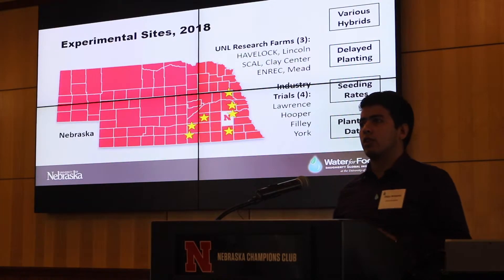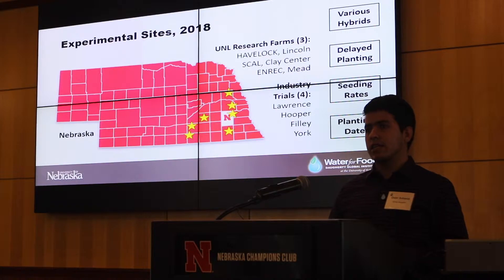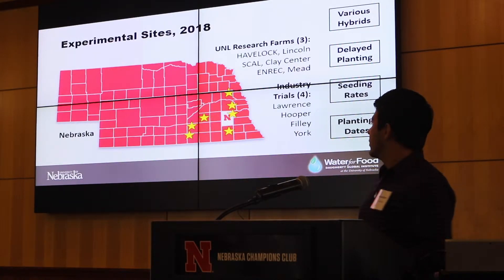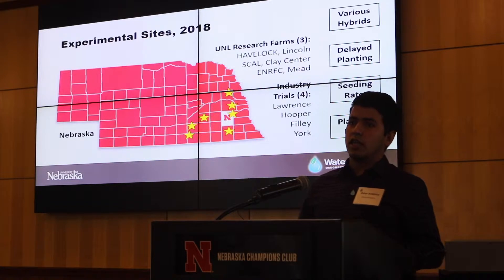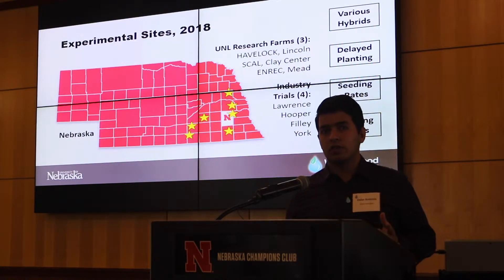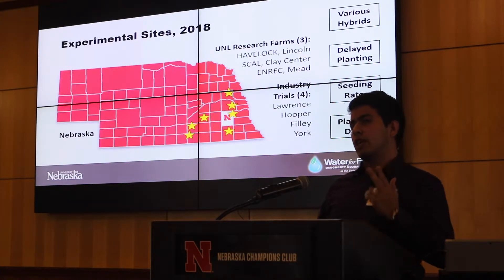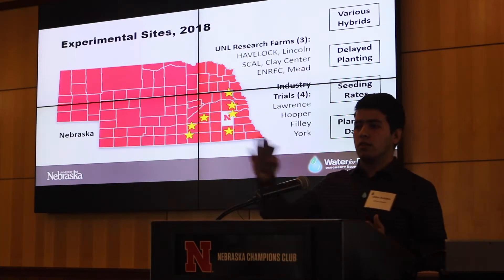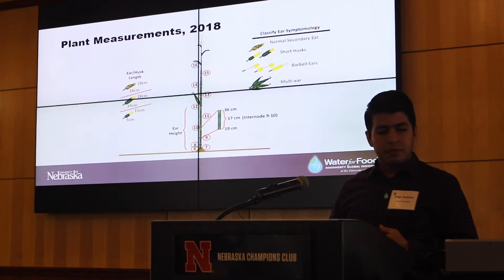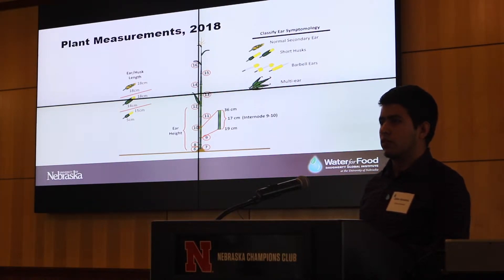In 2018, we established seven experimental fields located in eastern Nebraska. Three of them were UNL research farms, and four of them were industry trials, through collaboration and partnership with some private companies in the area. In those seven locations, we are evaluating different components: different hybrids, different delayed planting, different seeding rates from low all the way to very high, and also different planting dates.